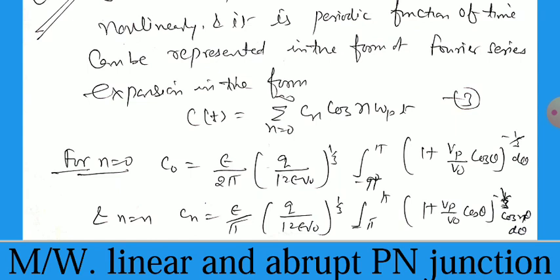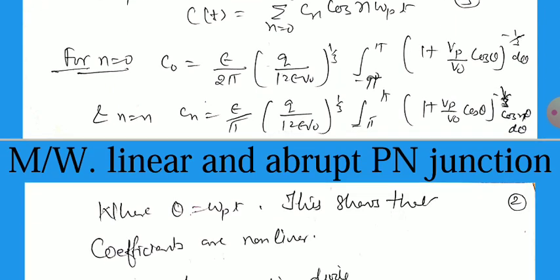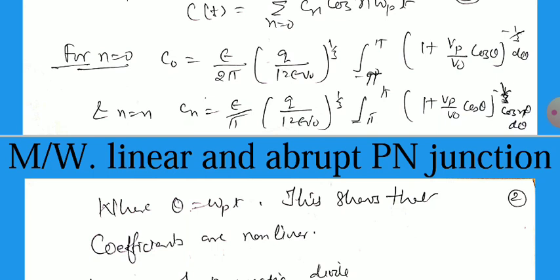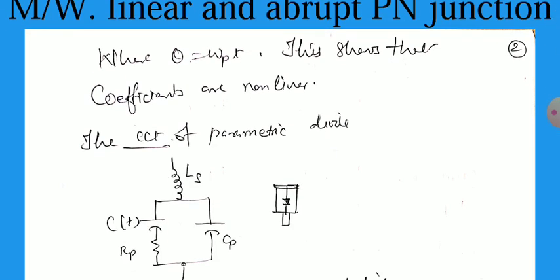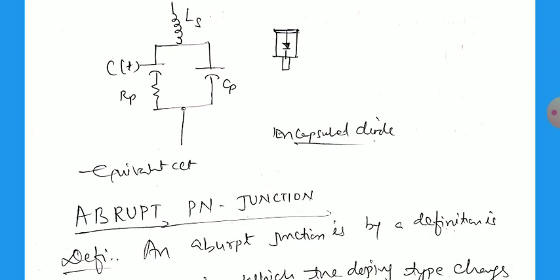Where n equal to 0, we can say C0 equal to epsilon by 2 pi multiplied by Q over 12 epsilon V0 power 1 by 3, the limit between minus pi to pi, 1 plus Vp by V0 cos theta power minus 1 by 3 d theta. Similarly for n equal to n, we can write Cn where theta equal to omega p t, and this shows that the coefficients are nonlinear. The circuit for the parametric diode is just like the tank circuit where Ls is the inductance of the secondary coil and Ct is the capacitor which depends on time.